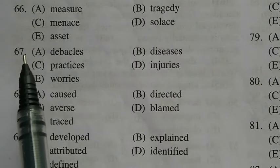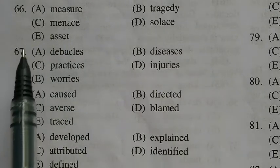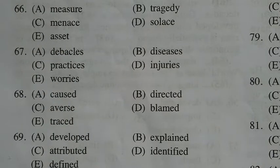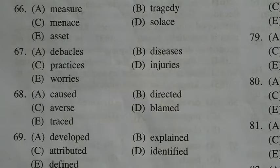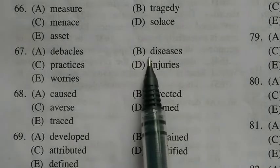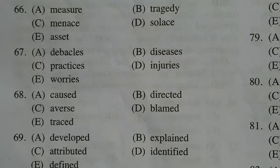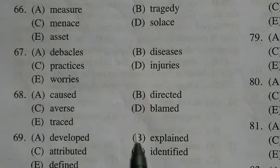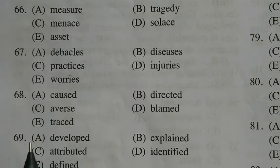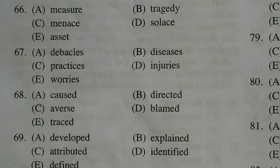The answer to question 66 is C: smoking is the biggest preventable 'menace' to mankind. The answer to question 67 is B: many serious 'diseases' including lung cancer. The answer to question 68 is 'traced': the diseases are traced to smoking habits.